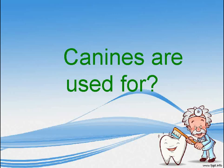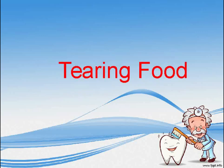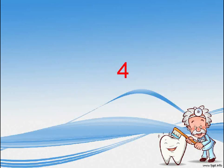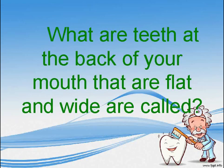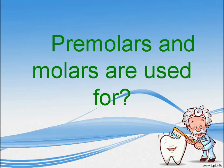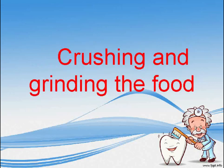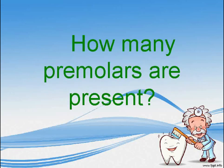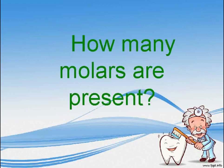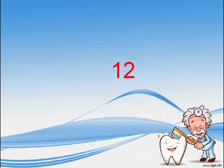Canines are used for? Tearing. How many canines are present in all? What are the teeth at the back of your mouth that are flat and wide called? Premolars and molars. Premolars and molars are used for? Crushing and grinding the food. How many premolars are present? Eight. How many molars are present? Twelve.